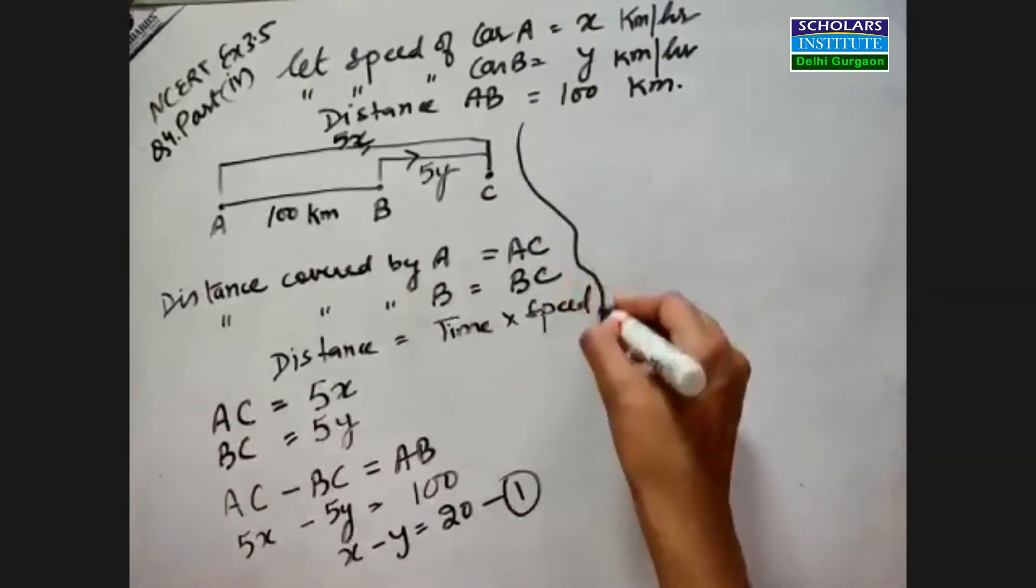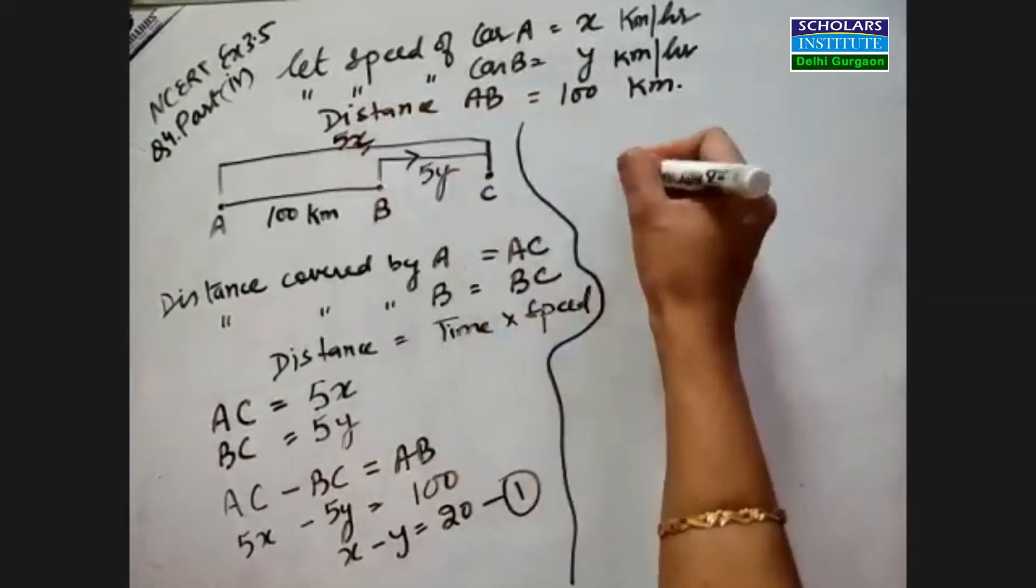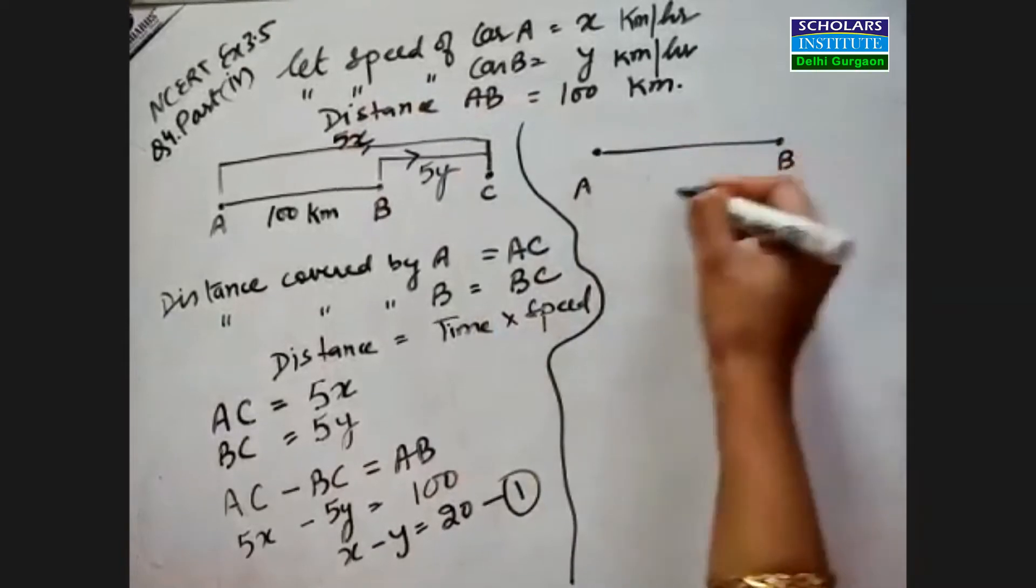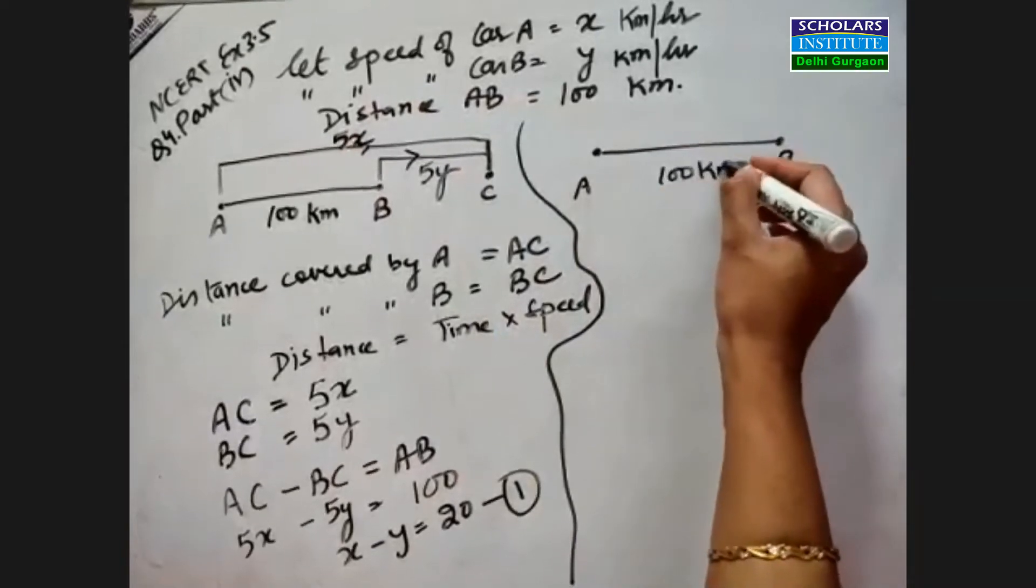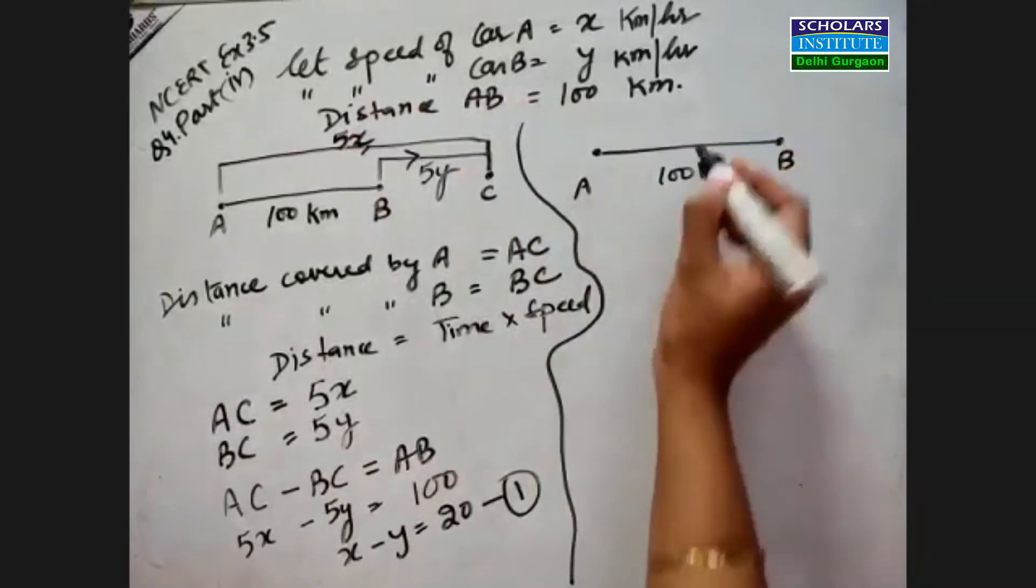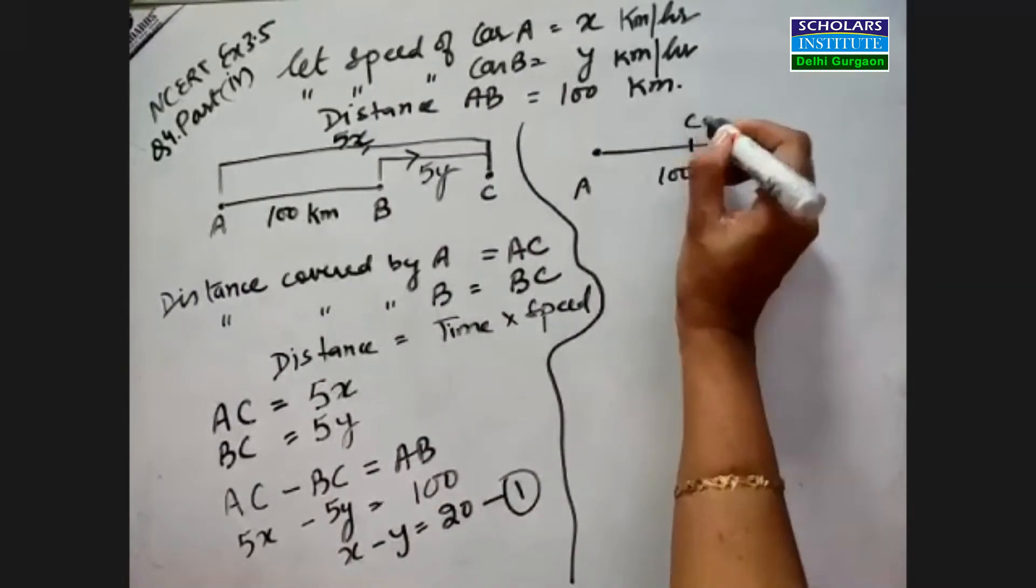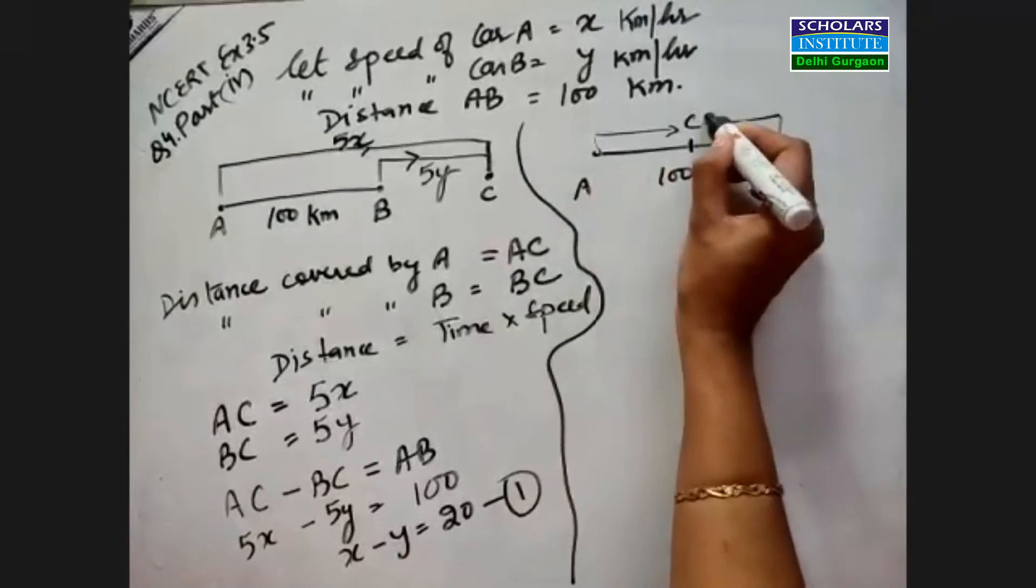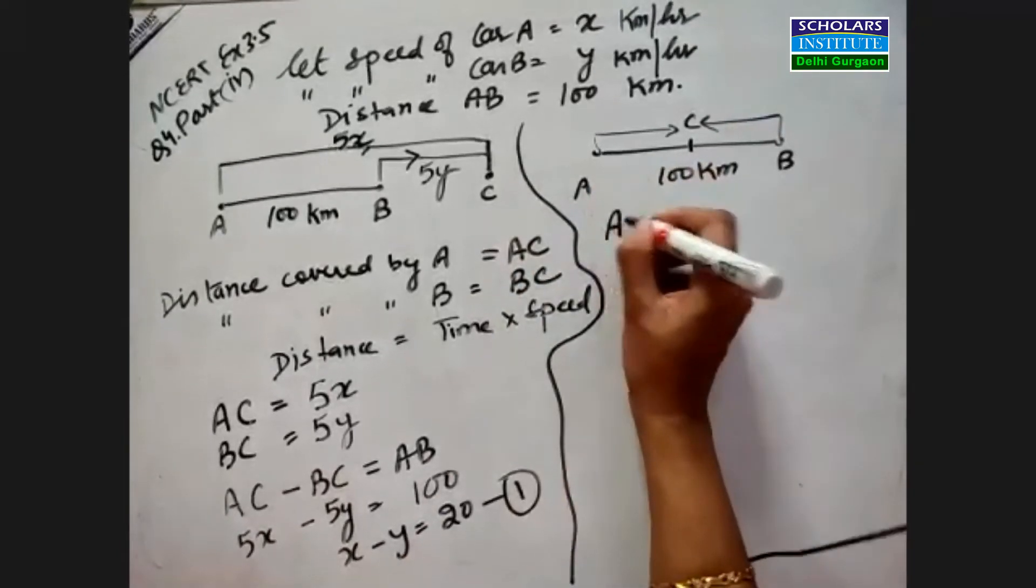Now for case 2, what's happening? If they travel towards each other, they meet in one hour. Suppose they meet here at point C. Now they're coming from opposite sides towards each other.